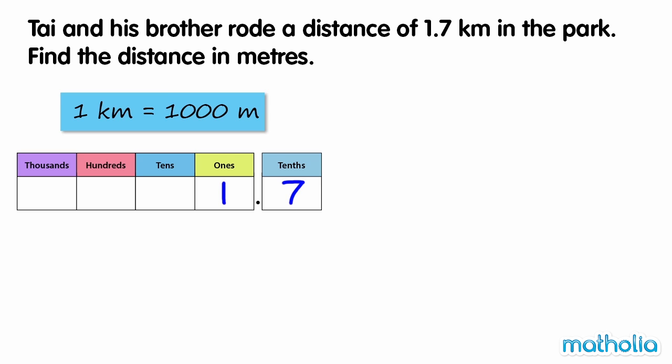We can multiply by one thousand by shifting the digits in the place value chart three places to the left.